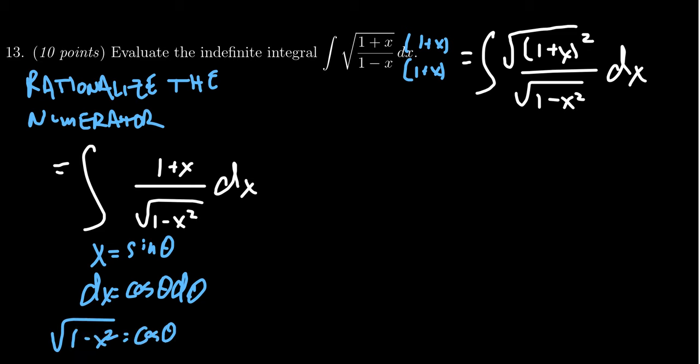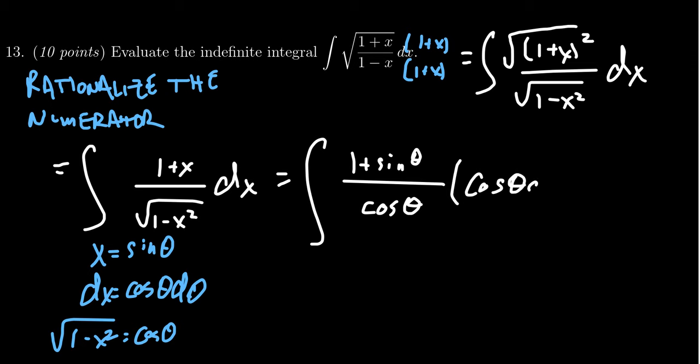So with those substitutions, we're going to end up with 1 plus sine theta, 1 over cosine theta. And then we're going to times this by cosine theta d theta. For which case, the cosines cancel out. And we're left to integrate 1 plus sine theta d theta.